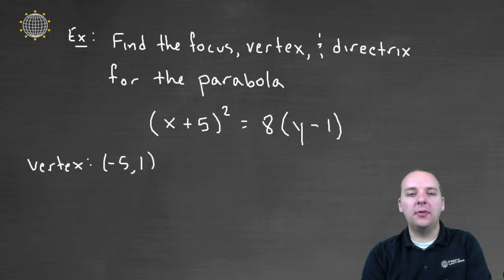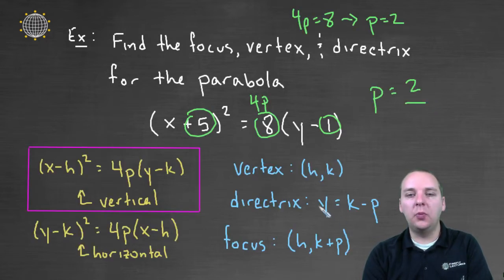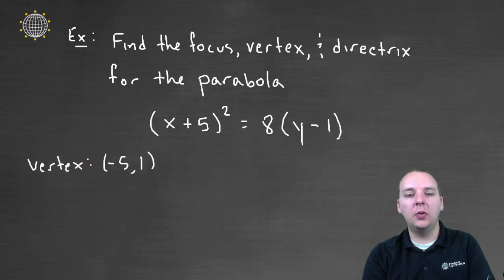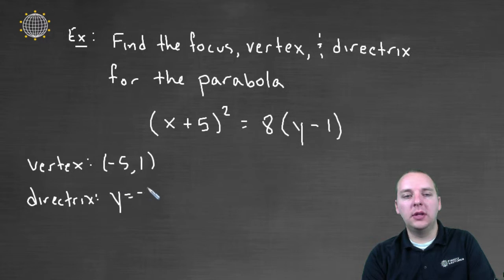All right, so we have, let's see, what was our formula? We had y = k - p. Well, our k was 1 and our p was 2. So our directrix will be at y = -1. y equals negative 1.